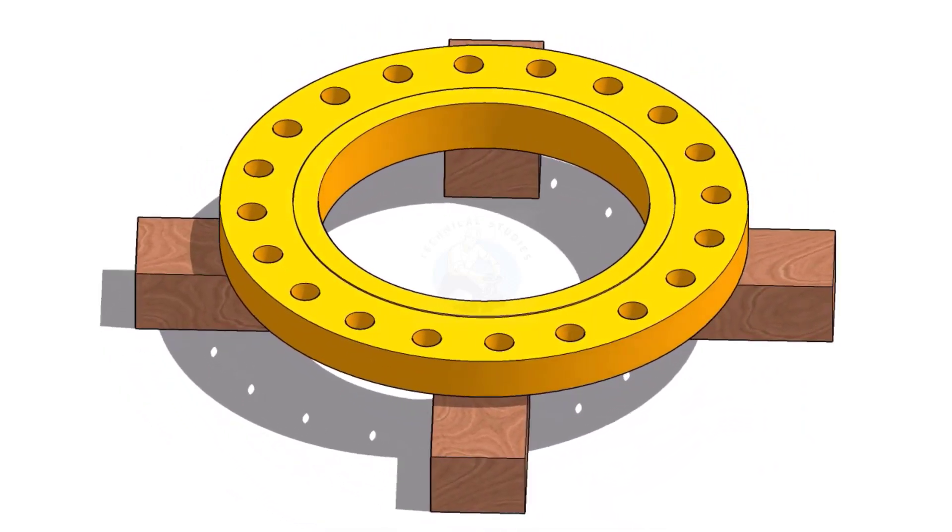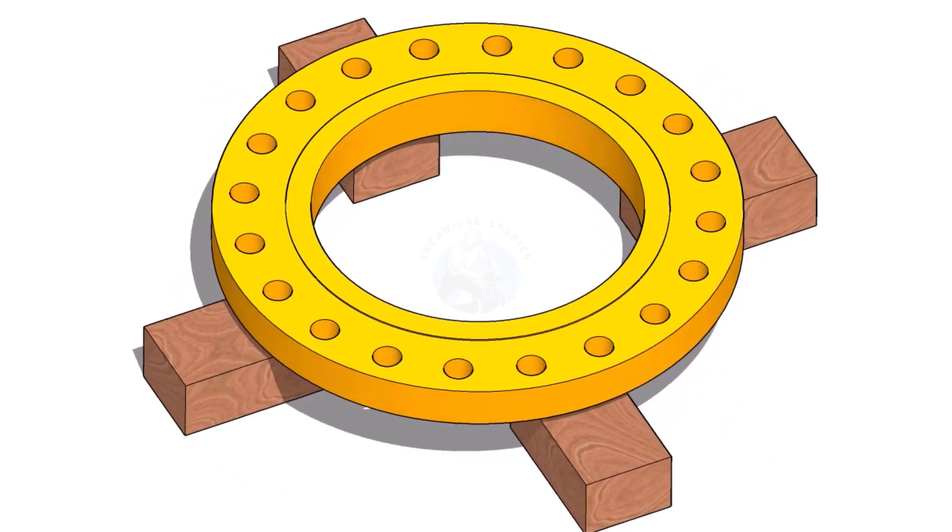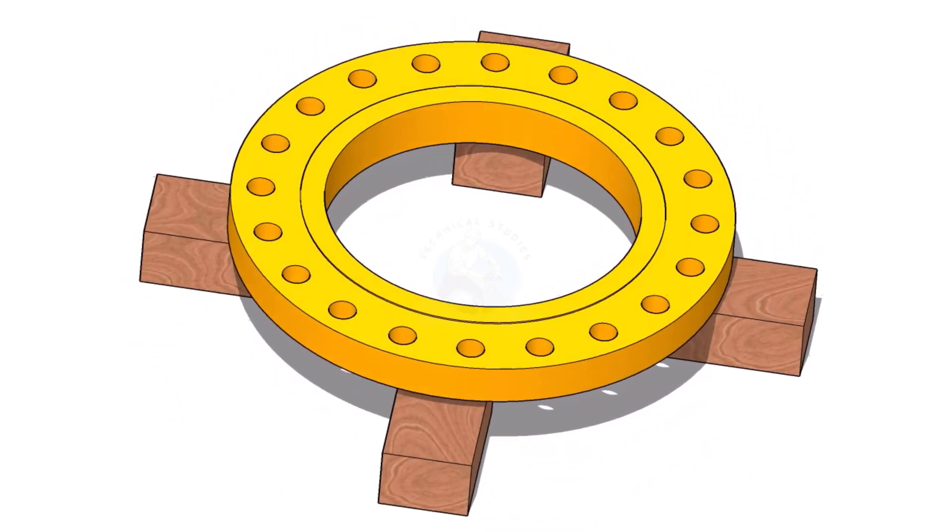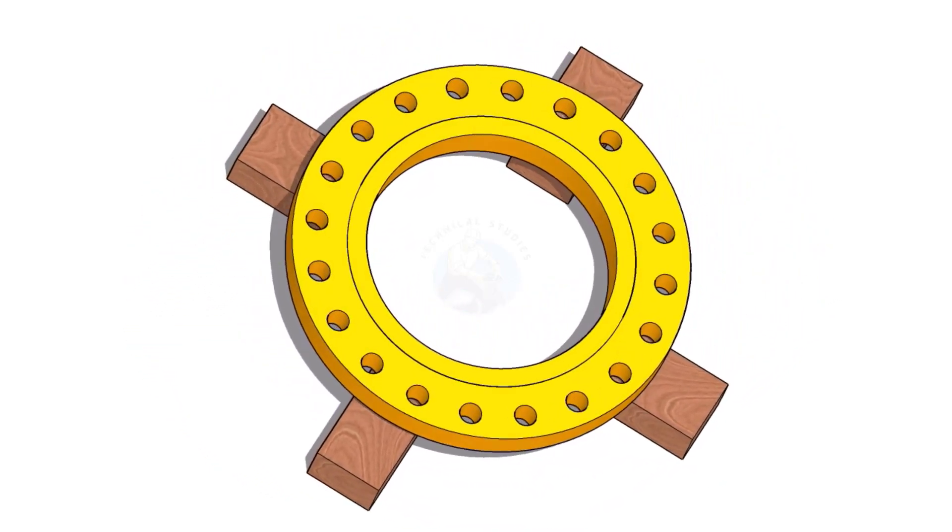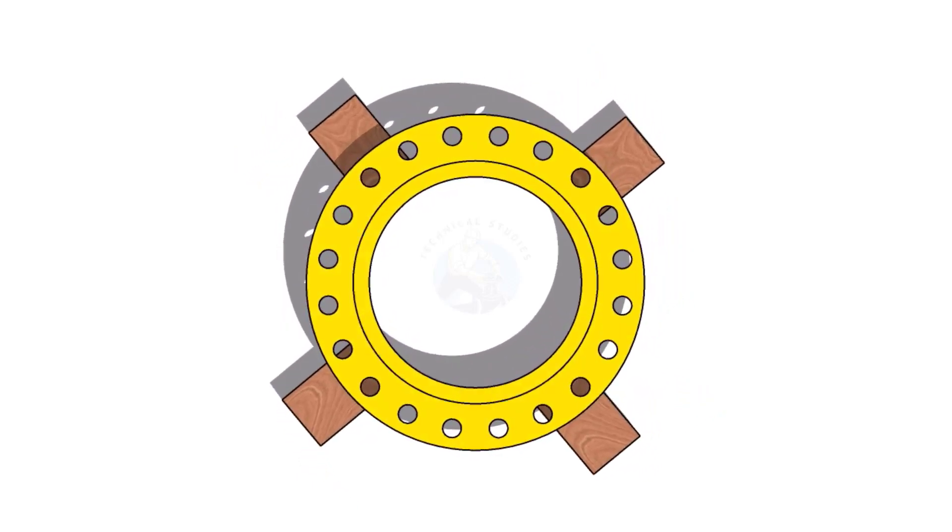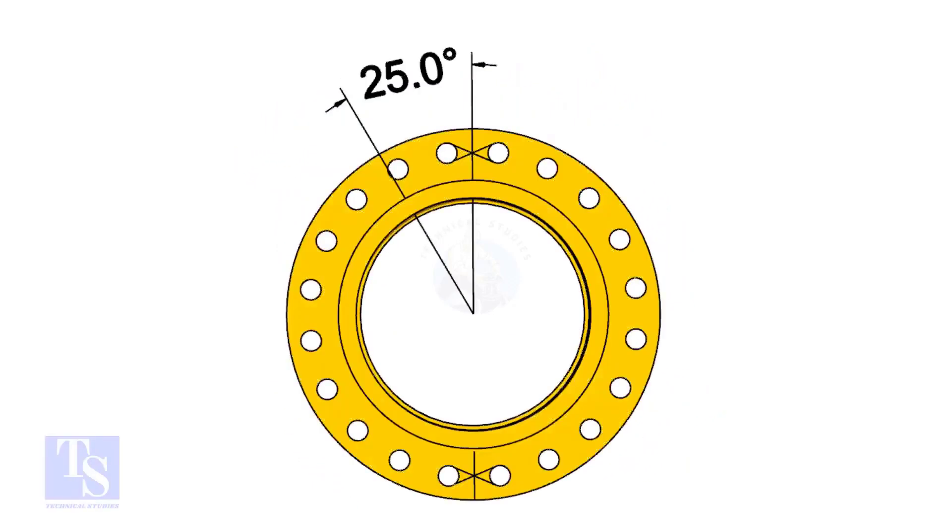I choose a slip-on flange for the example, but the calculation and the procedure are same for all flanges. The pipe and the flange size is 16 inch, and the flange will rotate 25 degree anti-clockwise.